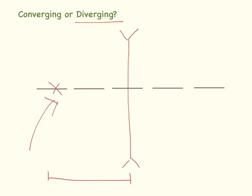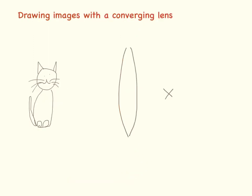This is how diverging lenses can also be drawn in an exam — with arrows pointing inwards. So how do we draw images using a converging lens? There are a few rules you need to follow, and I'll summarise these for you in a second.